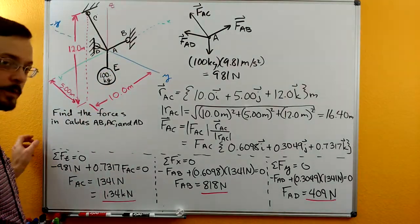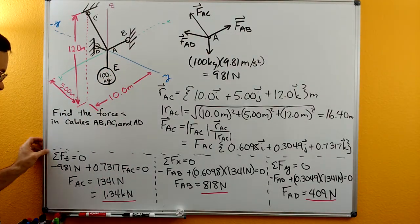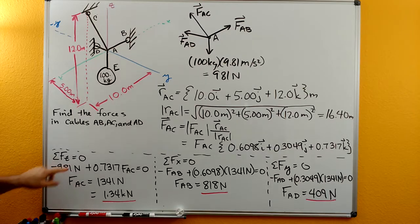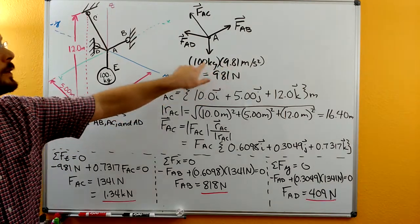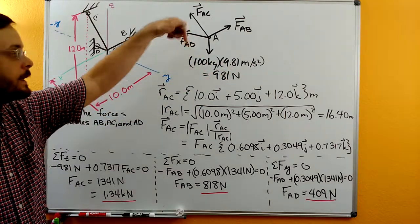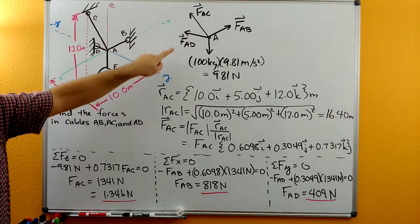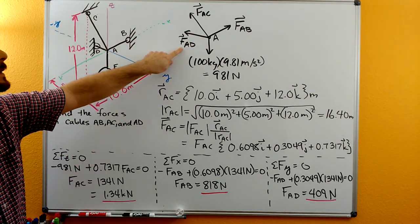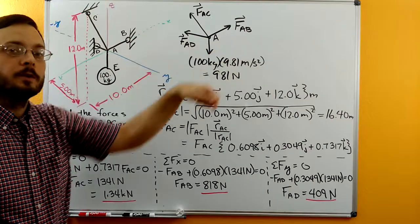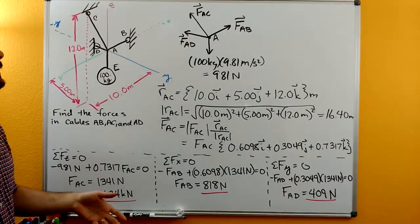Now we can do our sum of forces. So we'll start in sum of forces and Z. We'll get that the weight is 981 newtons. It's acting in the negative Z direction. There's no Z component of FAD and there's no Z component of FAB. So they don't show up in the equation.